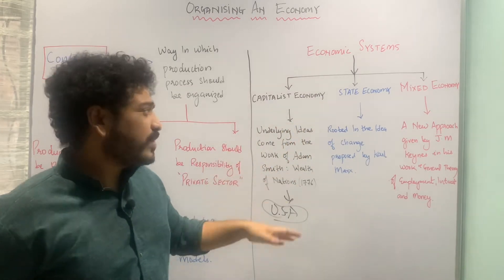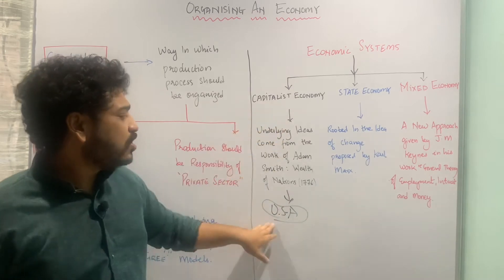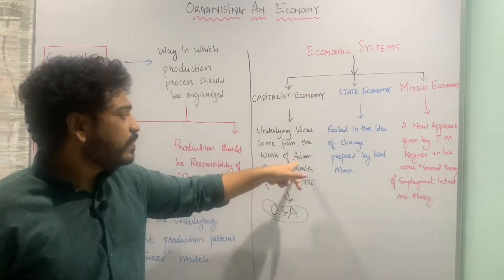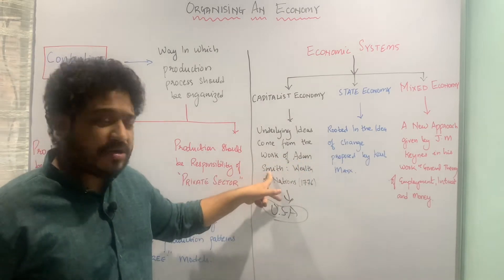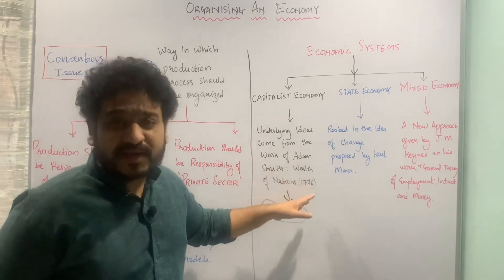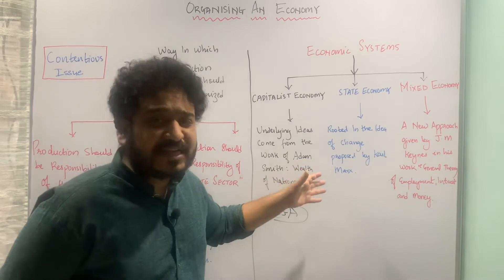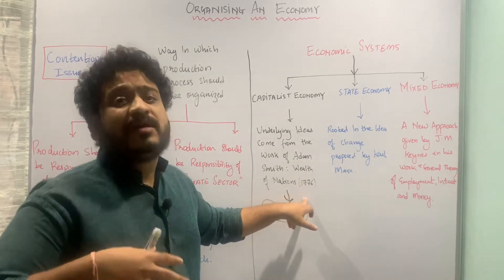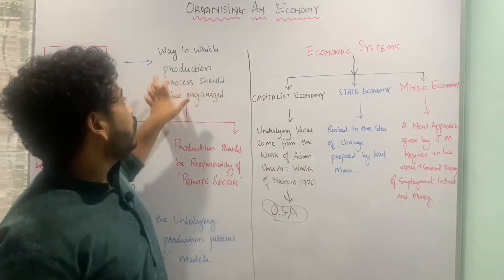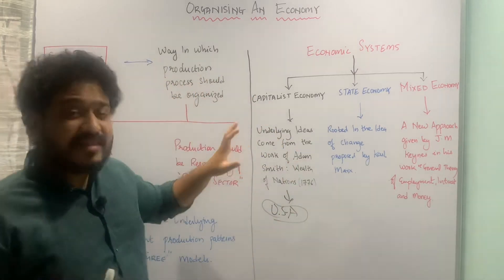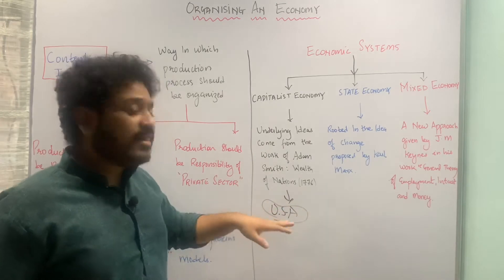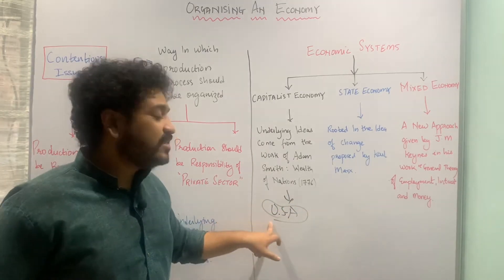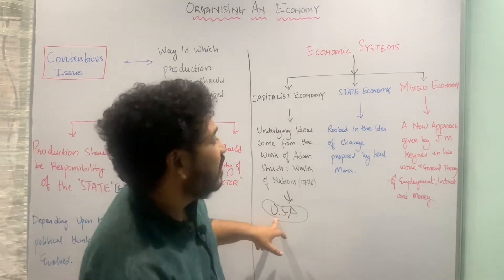In the capitalist economy, the underlying idea came from Adam Smith who wrote 'An Enquiry into the Nature and Causes of the Wealth of Nations' in 1776. He said that private individuals should be active, should look at the process of production, and should organize it. This is witnessed in the United States of America.